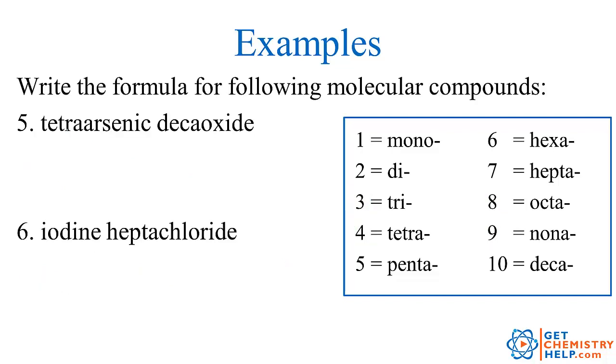Now let's try a few the other way. So in these we're given the name and we're going to determine the formula. So tetra arsenic. Tetra is four. So four arsenic. So As and four of them. Deca oxide. Deca is ten, oxide from oxygen. So O10. As4O10.